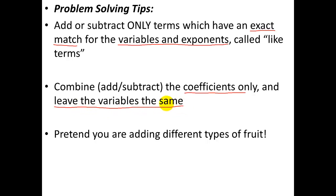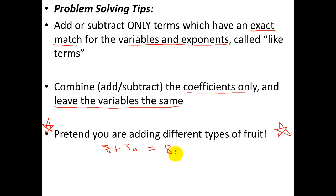The way to remember this — and it seems juvenile but it's the best way to not make a mistake — is to think about adding different types of fruit. If you have five apples and you try to add five bananas, you still have five apples and five bananas; you can't combine them to get ten of something. Likewise, if you have five apples and add three apples, you get exactly eight apples, but they're still apples. Whatever they are stays the same when you add or subtract. It's only when you multiply and divide that exponents or variables will change.